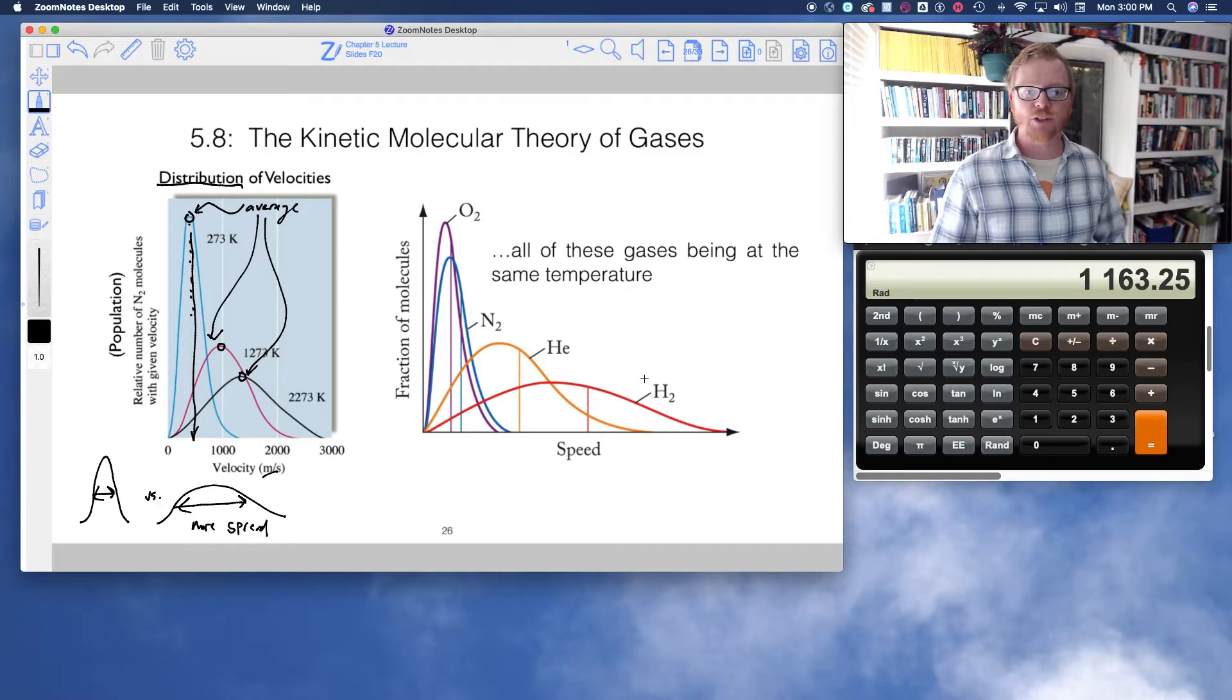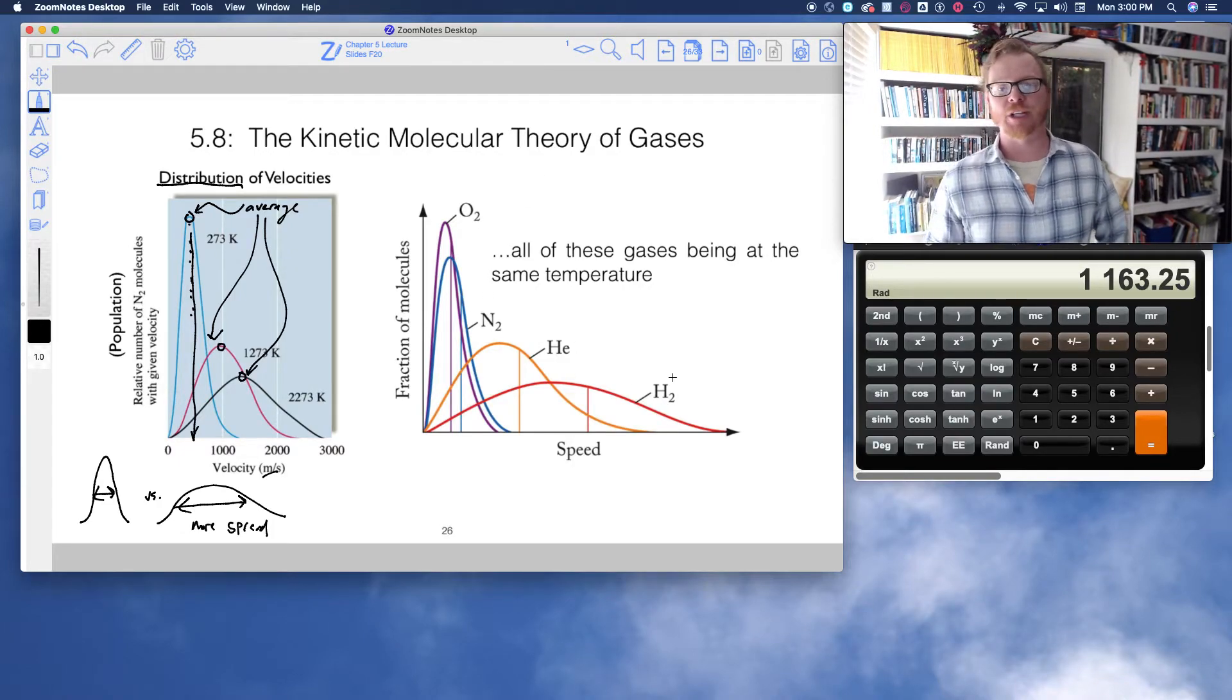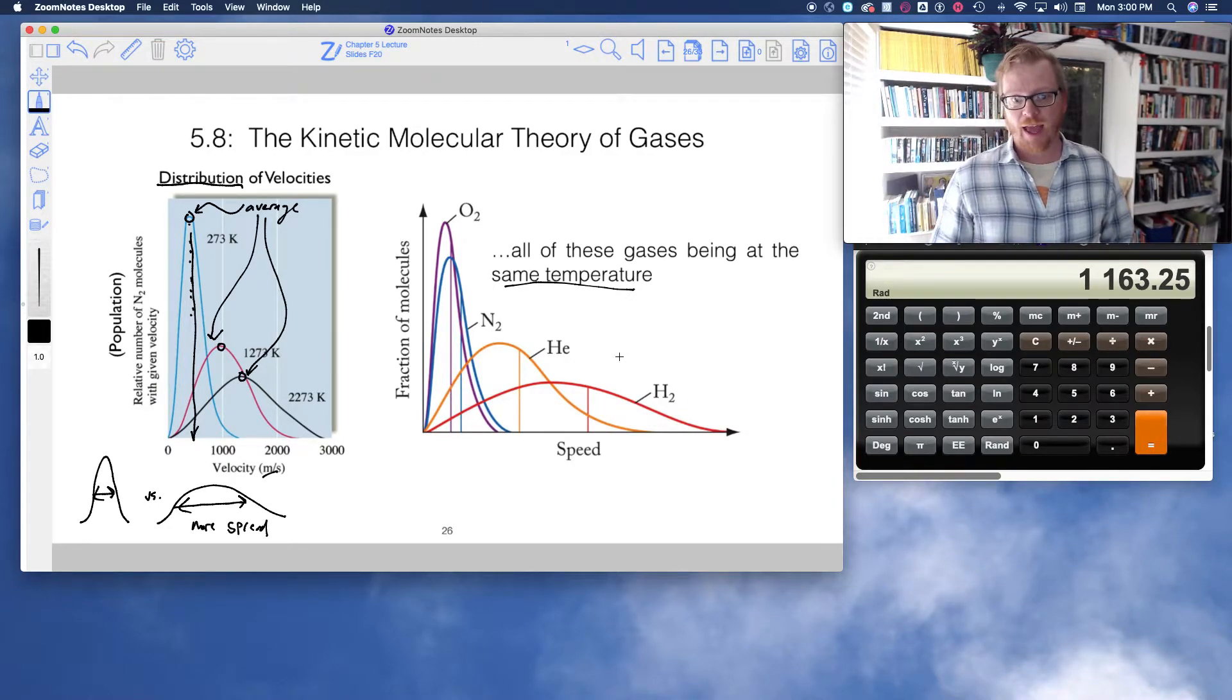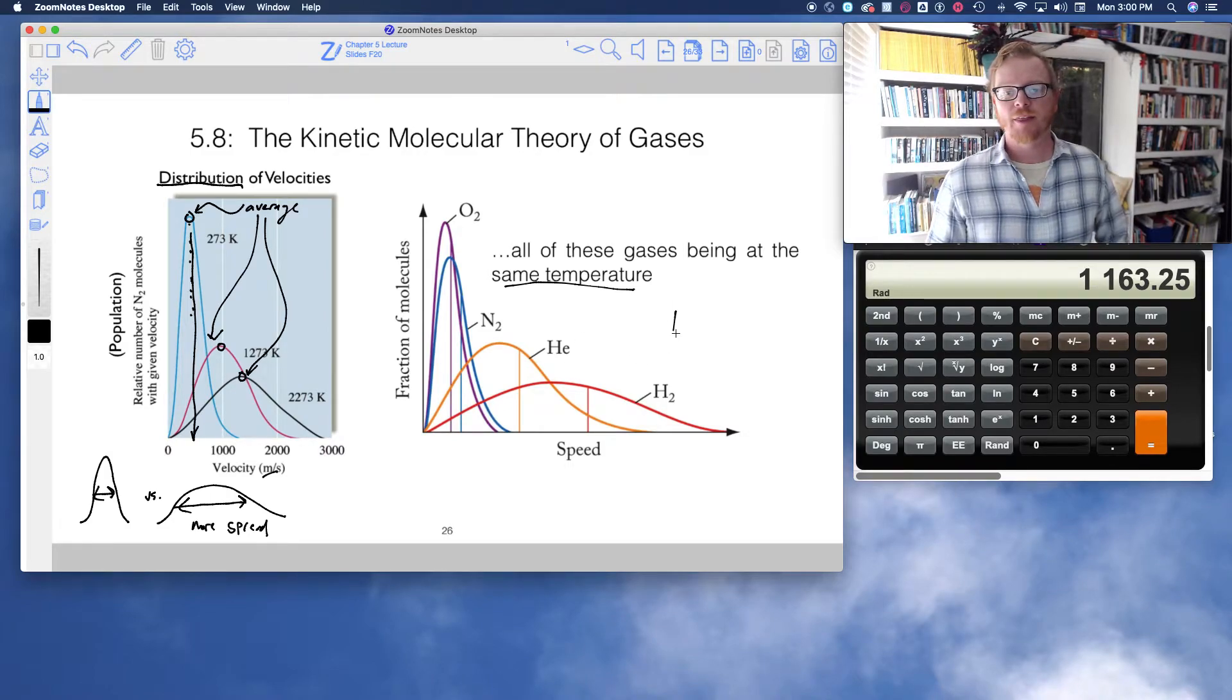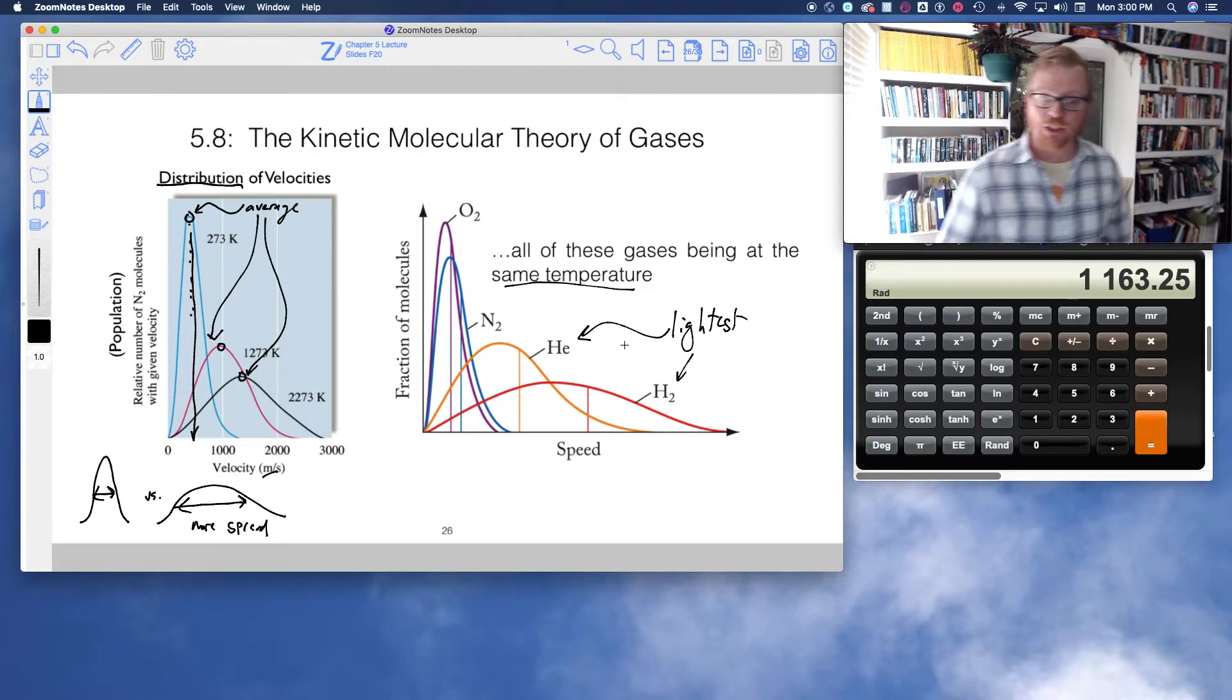I also want to point out too, so these are what happens with different temperature, so the velocity increases, but now what about these molecules, the difference in mass? So O2 into helium, hydrogen, and this would be a distribution of their speeds all being at the same temperature. And what you notice, the hydrogen and the helium, these two are the lightest compared to nitrogen and oxygen. So for the same given temperature, they move much, much faster.